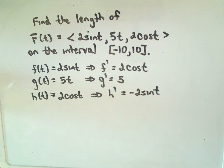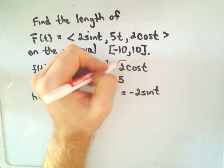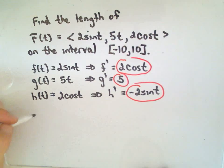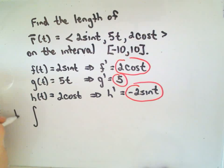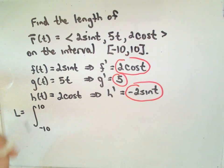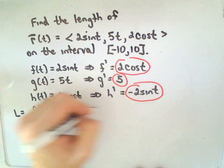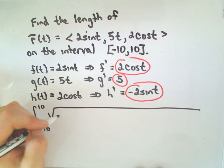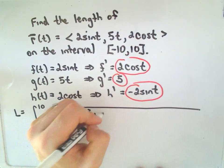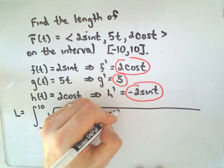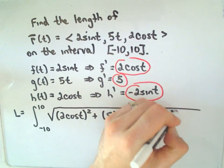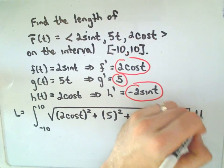This is the stuff now that we're going to have to plug into our formula. When we plug it in, we're going to have to square them. The length of this curve is going to be given by the integral from negative ten to ten. Take f prime, which is two cosine t, square that, plus g prime, which is five, square that, plus h prime, which is negative two sine t, square that one too.